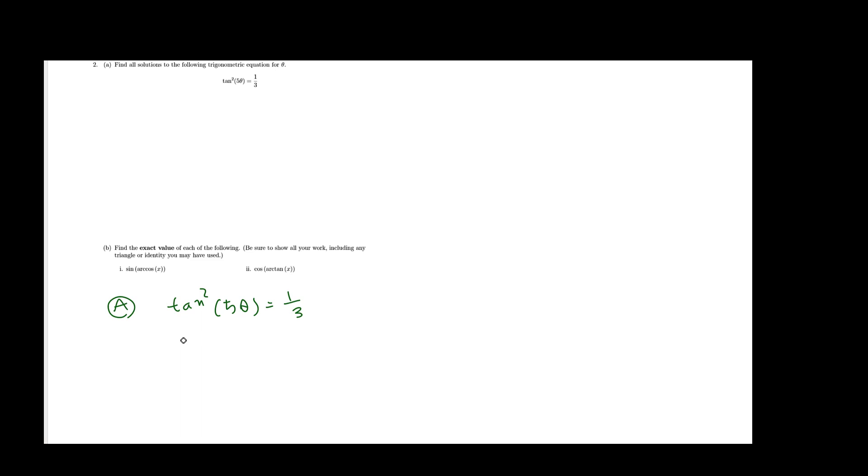Solving for tan here is not too bad because I just take the square root, and I will have, on the other side, plus minus square root of 1 third. Or I can write it as plus minus 1 over square root of 3, or plus minus square root of 3 over 3. Either one is okay.